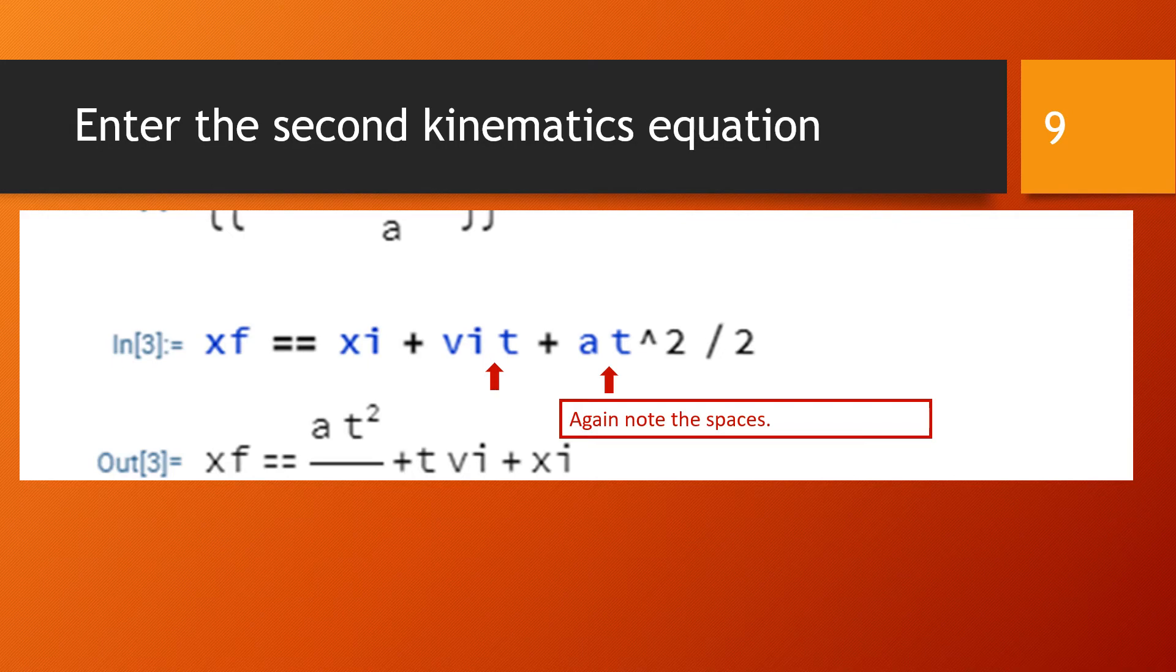xi, no space, that corresponds to the initial position. vi is the same as it was before, the initial velocity. There's a space between vi and t, that implies they're multiplied, if you want you can put an asterisk in there. Plus a*t^2 divided by 2. So the space between the a and the t means there's a variable a that is multiplying a variable t which is squared and then that gets divided by 2. Hit shift enter to get the equation In[3] Out[3].